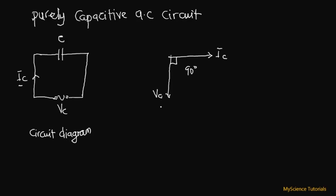There should be a way for us to find the opposition to the flow of current in this circuit. In a capacitive AC circuit, the opposition to the flow of alternating current is what we call the capacitive reactance, which is denoted by Xc.